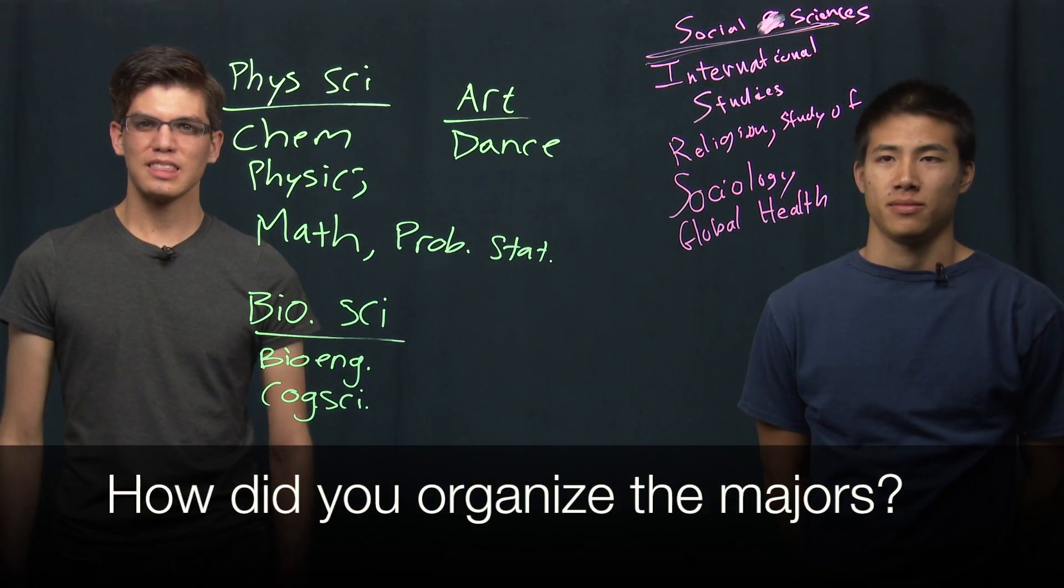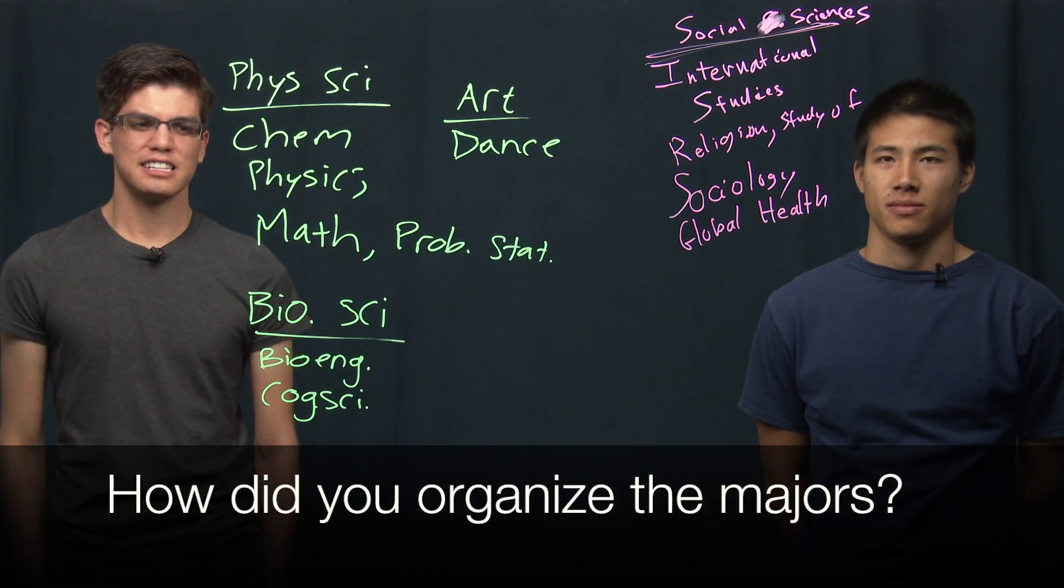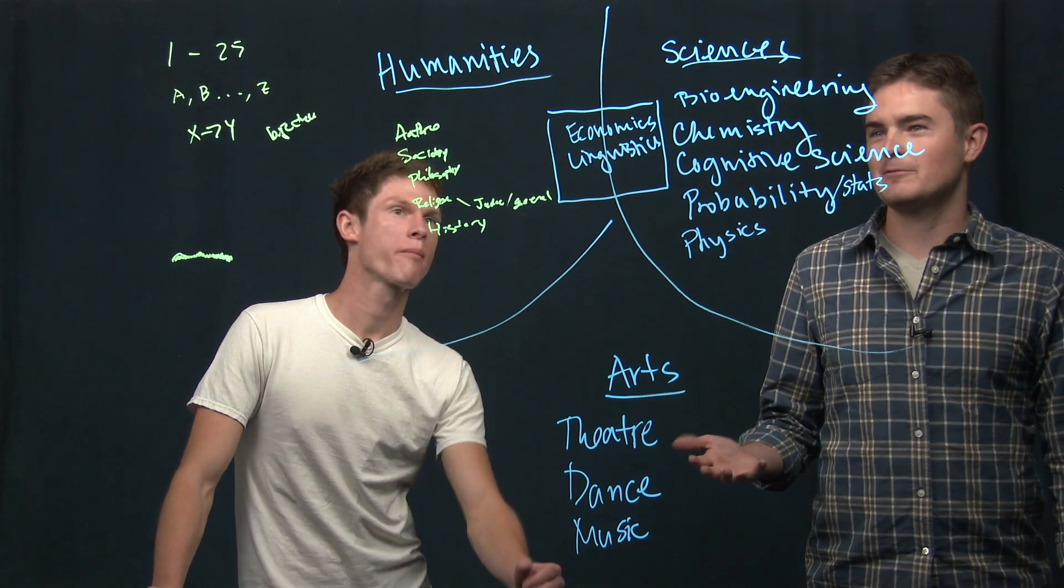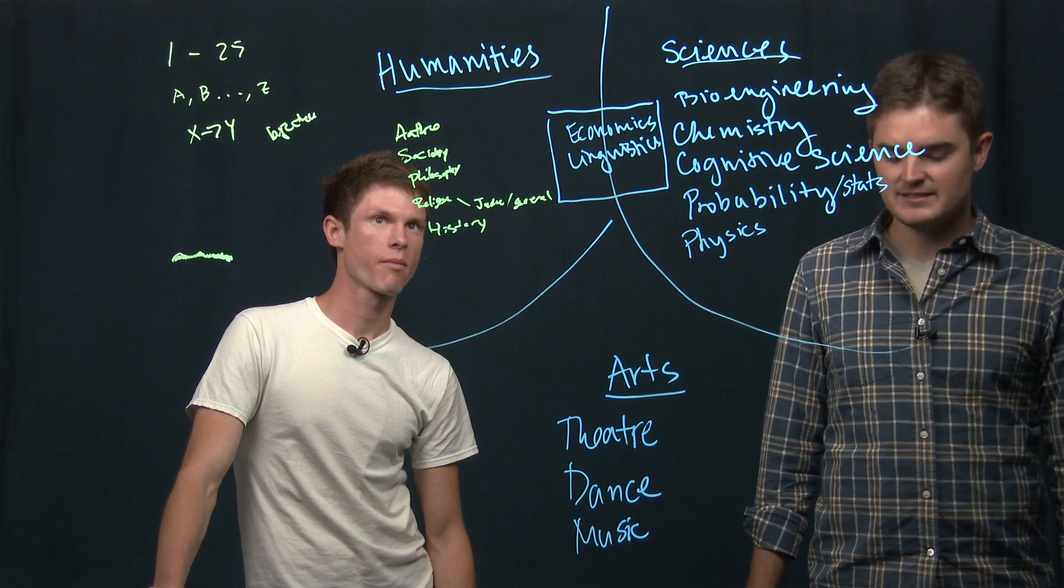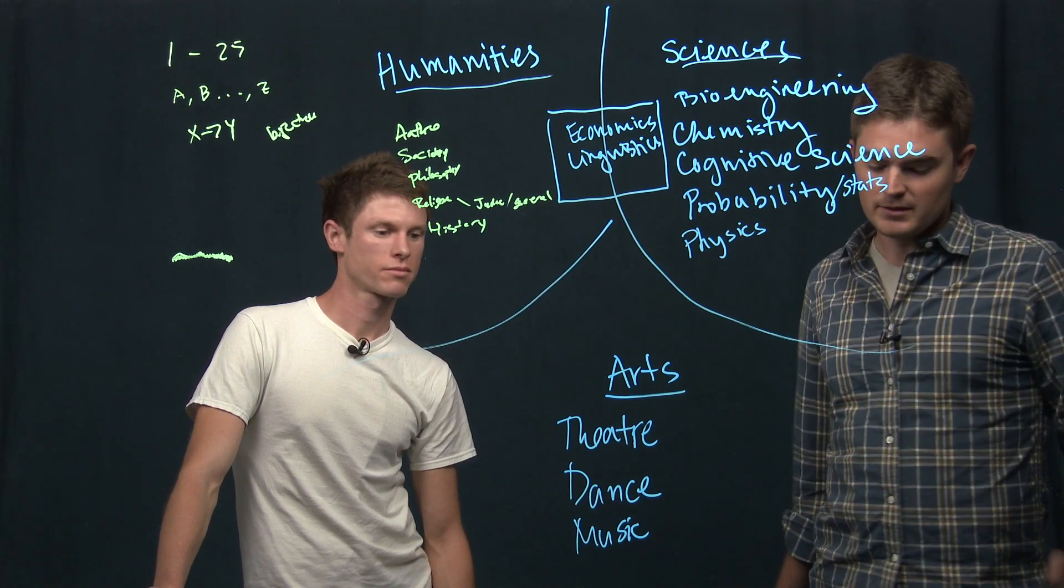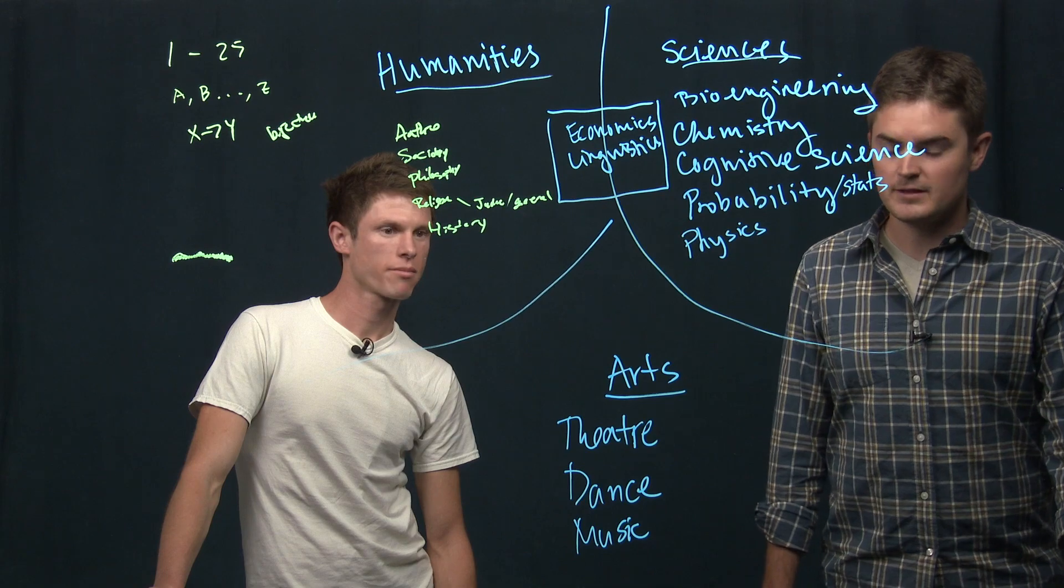Okay, so just explain to me a little bit about your organizational process, like how you went about making these lists. We came up with three major categories that we saw immediately from the list that we could sort of fit things into.